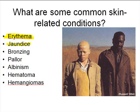Jaundice is another term commonly used to describe a skin condition. That's a yellowish appearance of the skin, and it's oftentimes an indicator that there is some sort of liver malfunction occurring. In Bio 202, we'll learn a little bit more about jaundice and why the skin gets a yellowish hue to it.